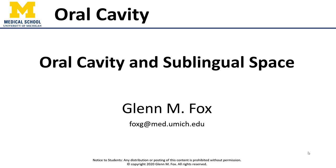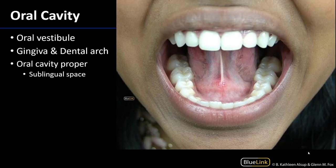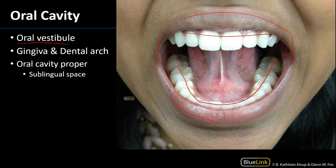Let's talk about the oral cavity and the sublingual space. The oral cavity can be divided into two major regions. The oral vestibule is everything that is superficial to the gingiva and the dental arches — basically everything between the labial and buccal surfaces and the teeth and gingiva is the oral vestibule.